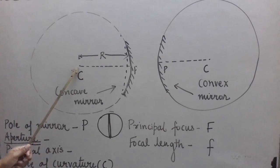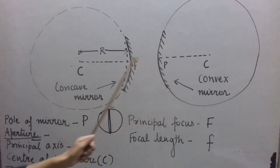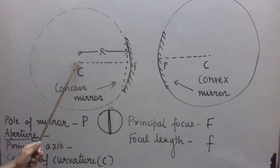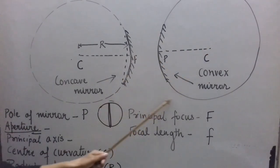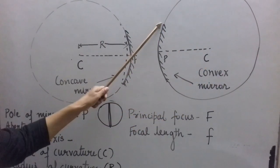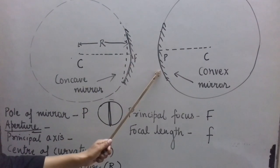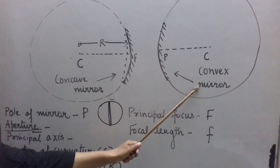Next is principal axis. But first, let us understand the centre of curvature. Concave and convex mirrors are both formed out of hollow glass spheres. The centre of that hollow glass sphere of which the spherical mirror forms a part is called its centre of curvature, represented by capital C. The centre of curvature of a concave mirror lies in front of it, while that of a convex mirror lies behind it.